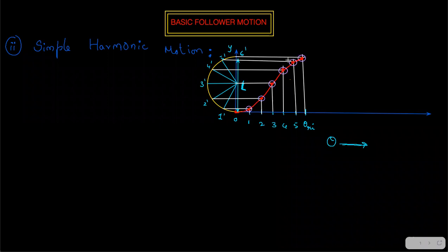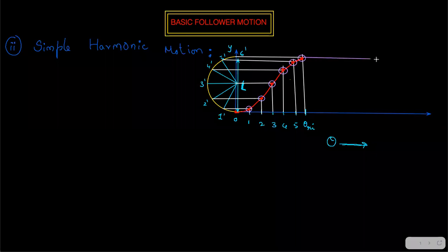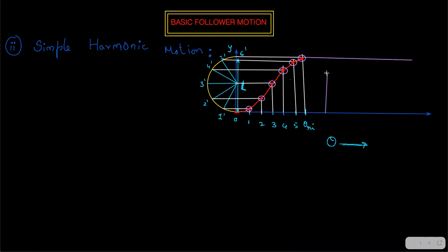Based on the cam rotation angle, you automatically get the lift of the follower. The next position includes dwell one, then return, then dwell two. For the return portion, divide it into equal parts as well — the same thing we did for the rise, just doing it faster.